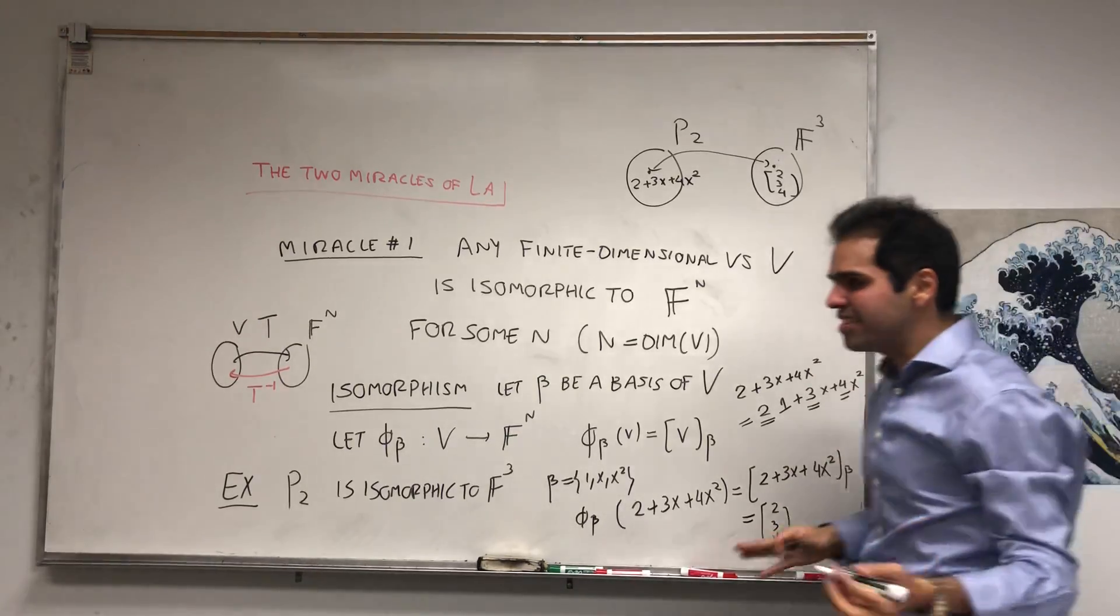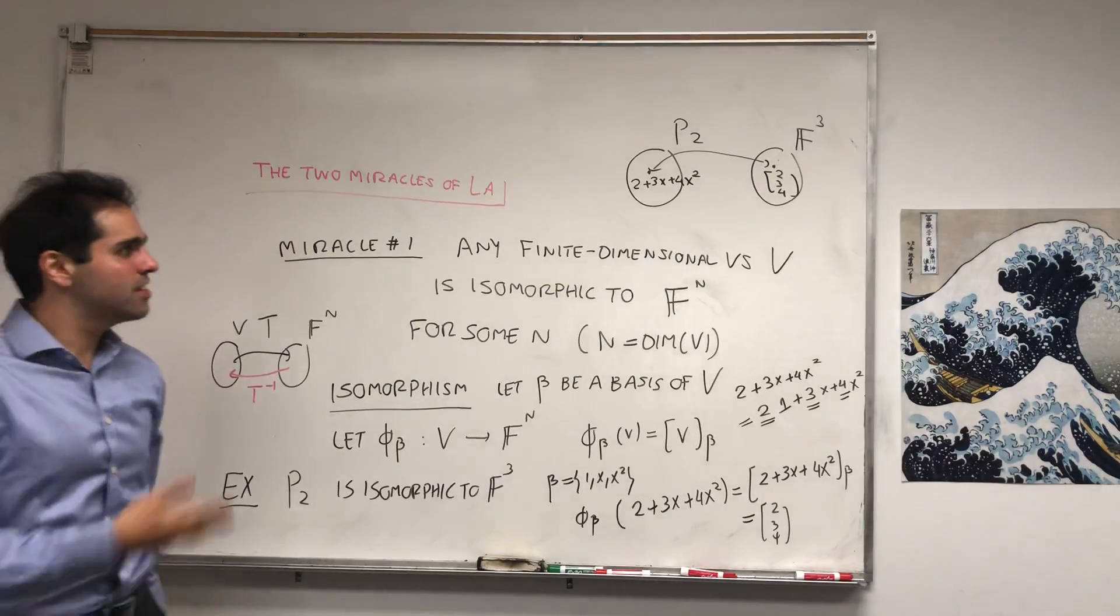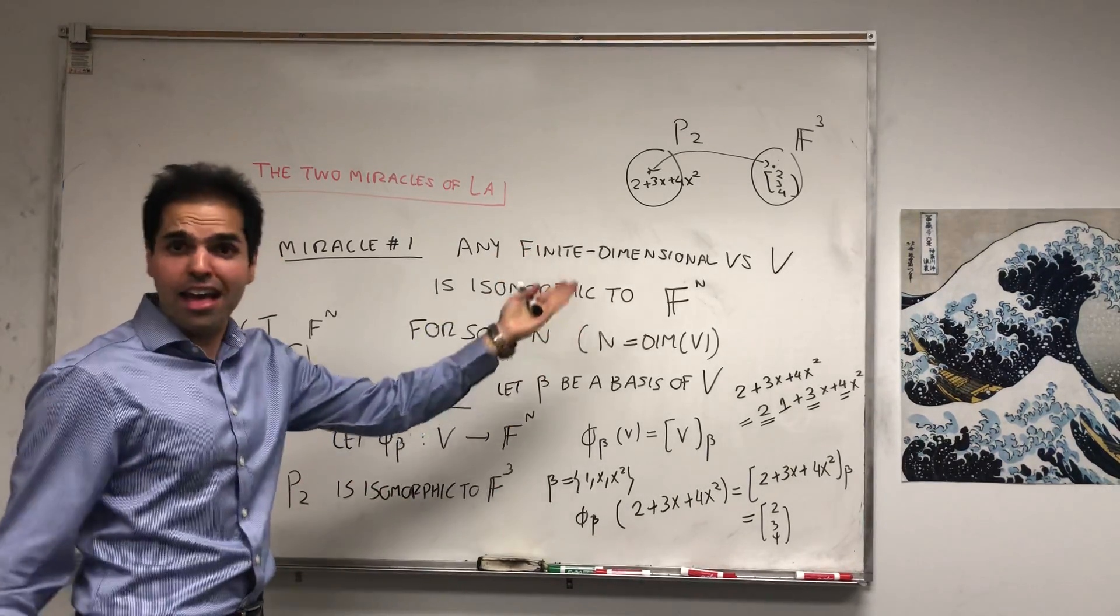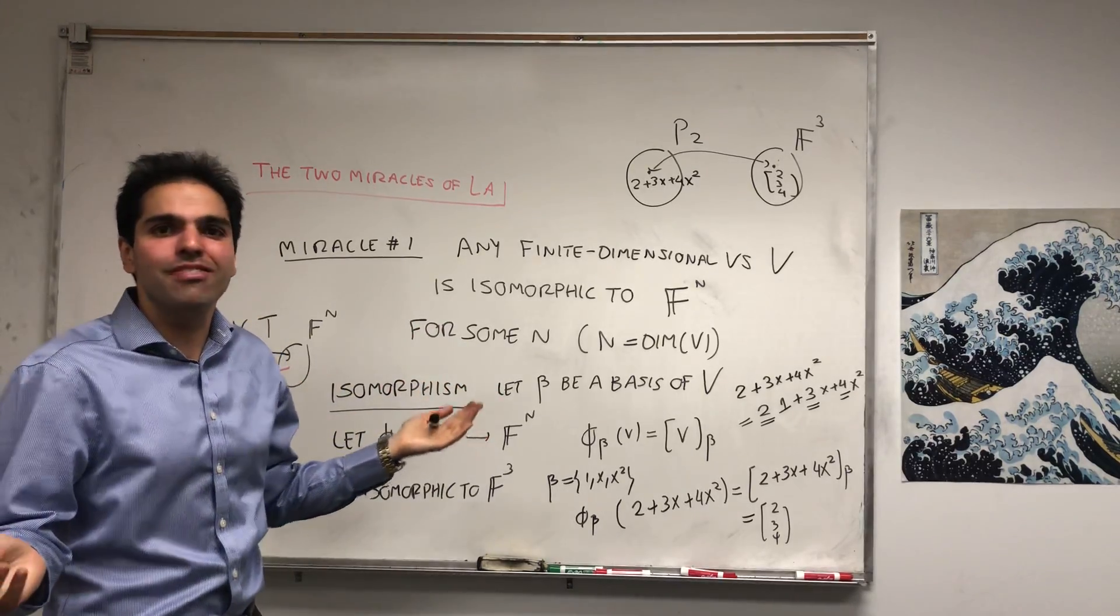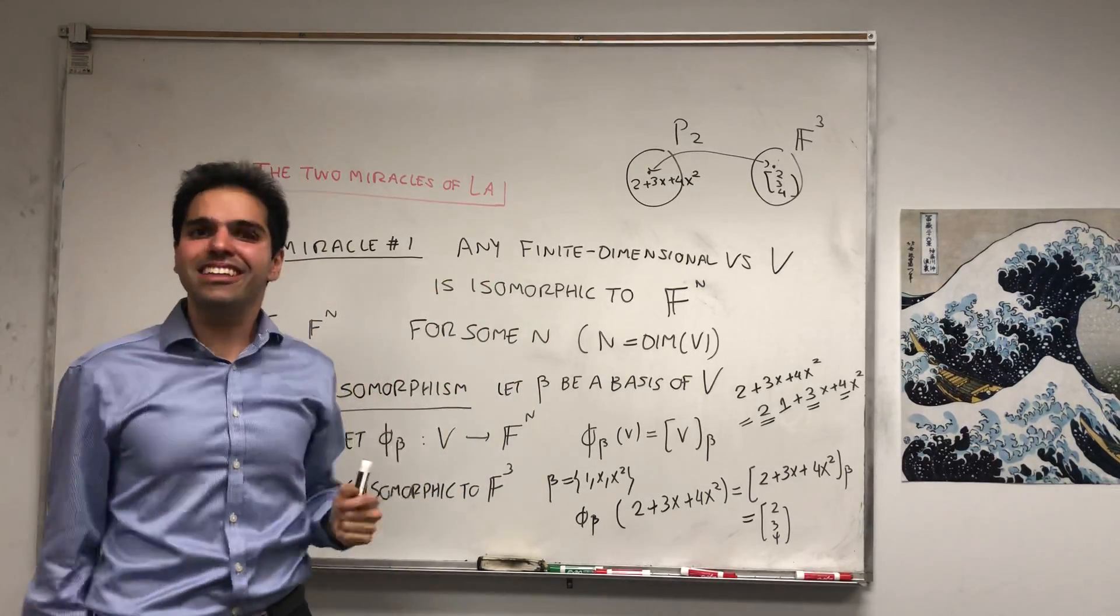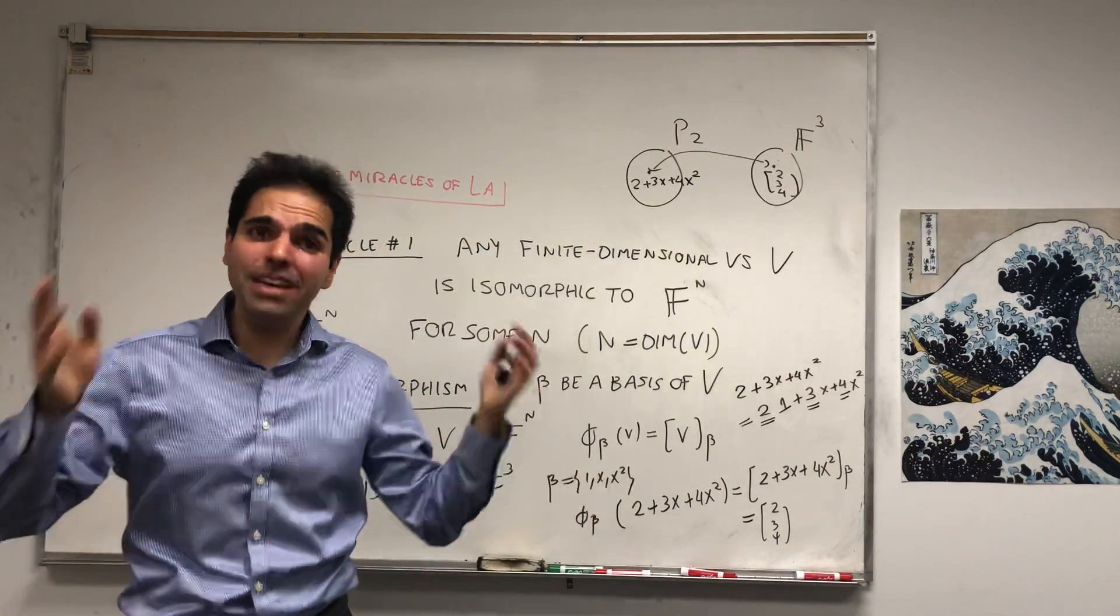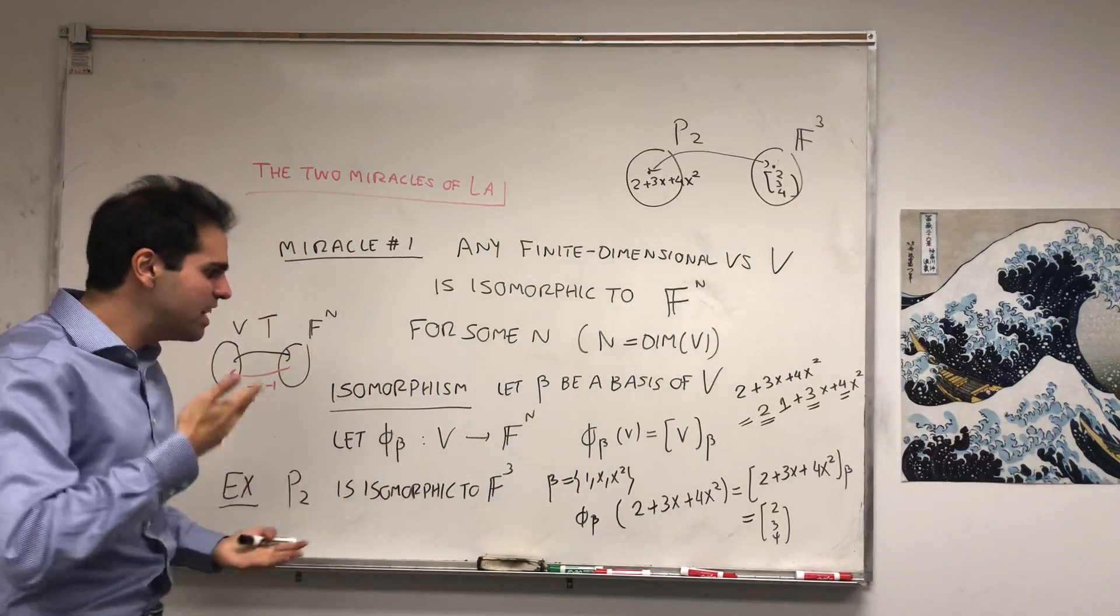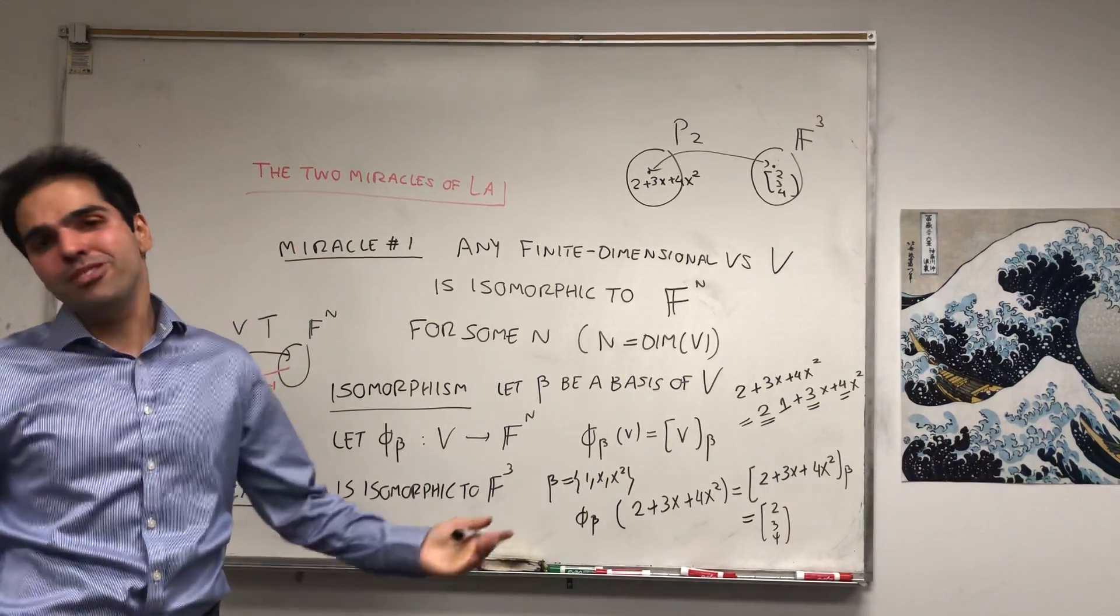So in other words, it's very easy to go back and forth between abstract vector spaces and concrete F^N's, and therefore for us, from now on, finite-dimensional vector spaces are just like the same as F^N. Again, which is a miracle, because I told you at the beginning vector spaces are very abstract. Suddenly they become super concrete.